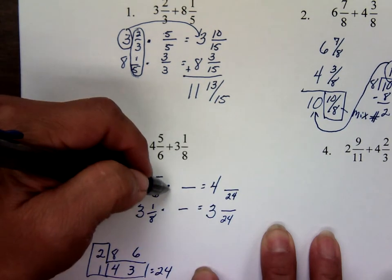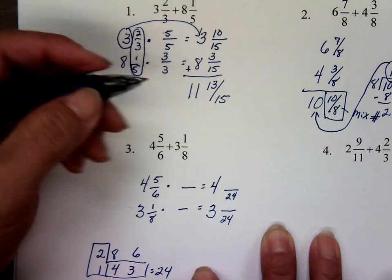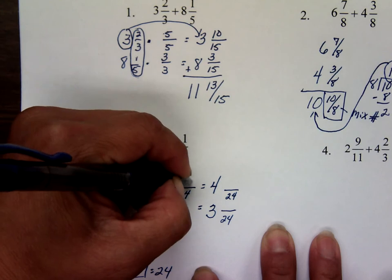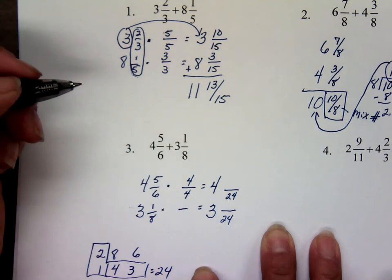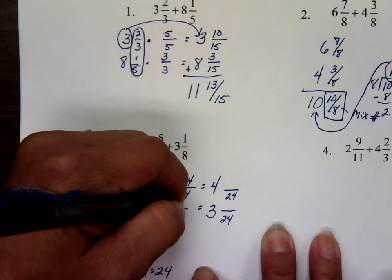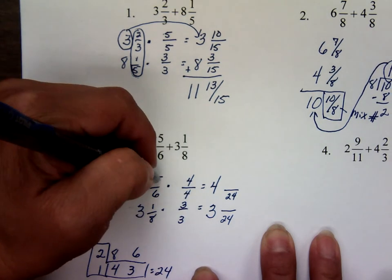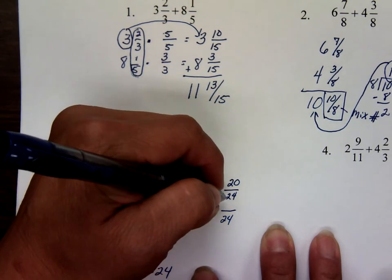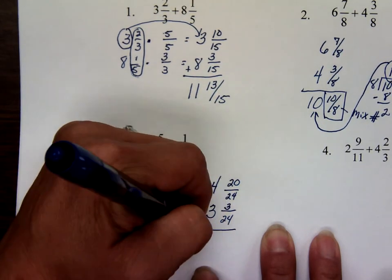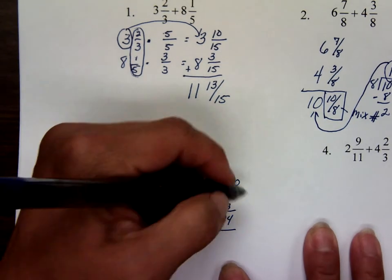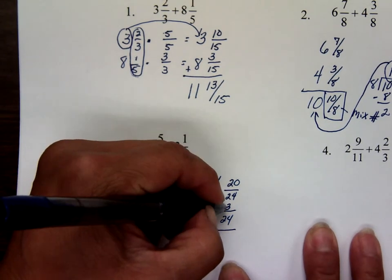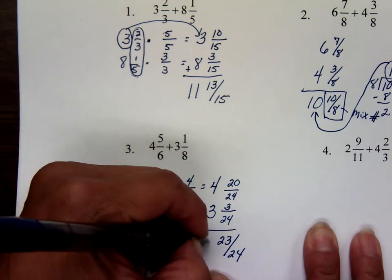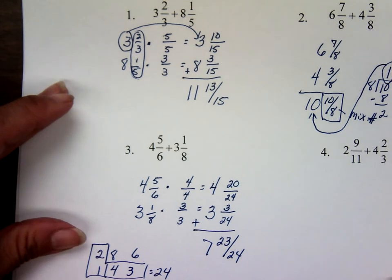Ask yourself: six times what equals twenty-four? Six times four equals twenty-four. And eight times what equals twenty-four? Which is three. Now multiply across: five times four is twenty, and one times three is three. Add them up: twenty plus three is twenty-three over twenty-four. And four plus three is seven. Your answer is seven and twenty-three over twenty-four.